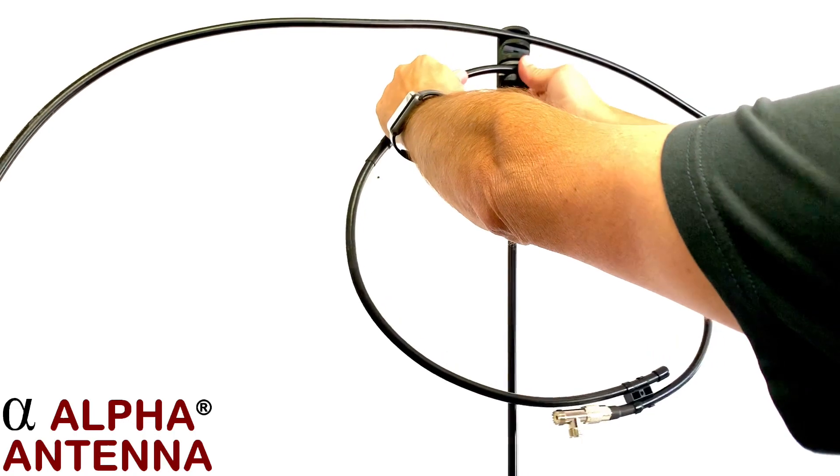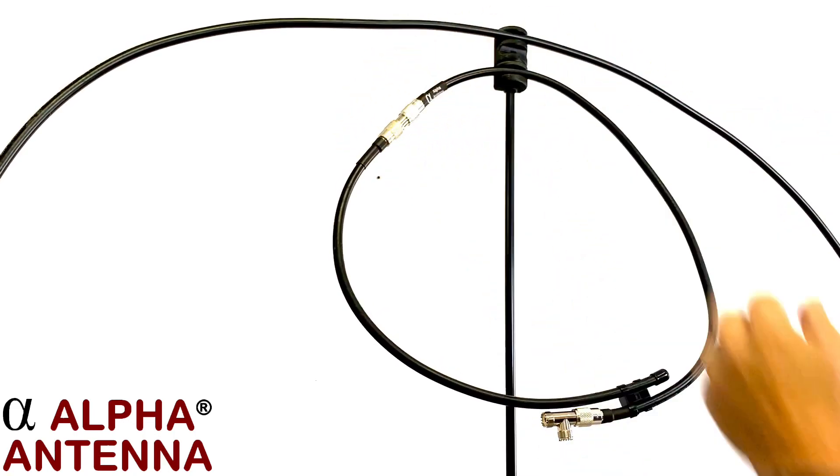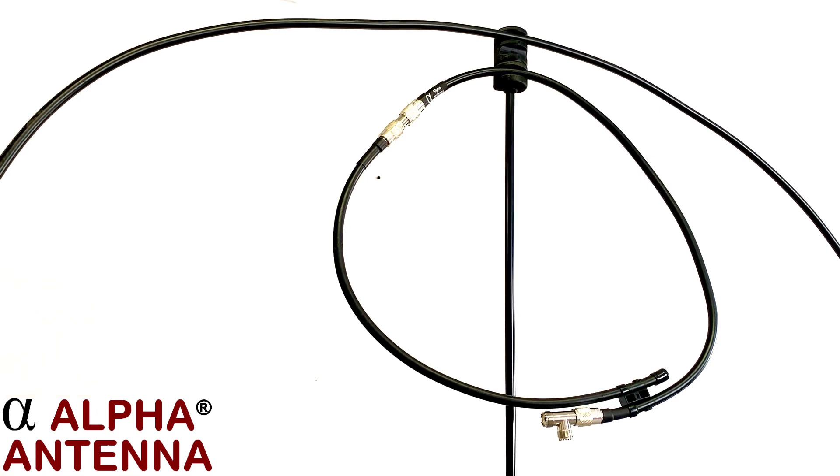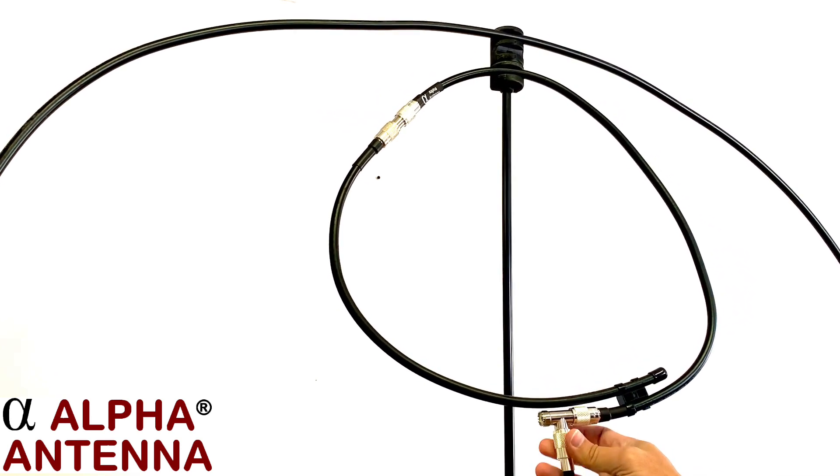Place this new loop where the old loop was removed, that smaller loop from the magnetic loop antenna. Then connect your feed line right here to the T on the T connector.